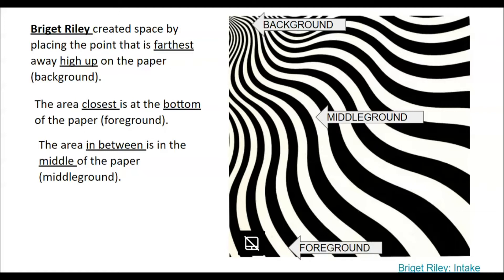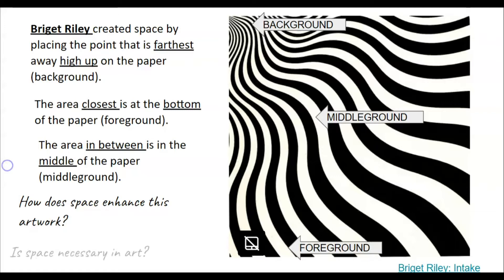So we have foreground at the bottom — things are close and large. The middle ground is in the middle — things are medium size. And we have the background high up on the paper — things are tiny and far away.